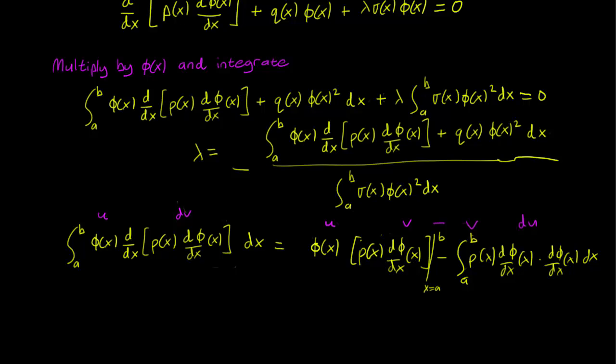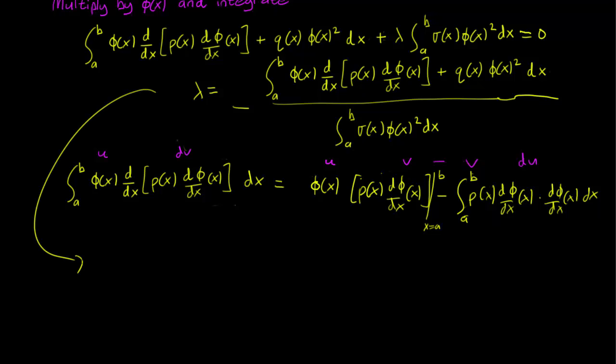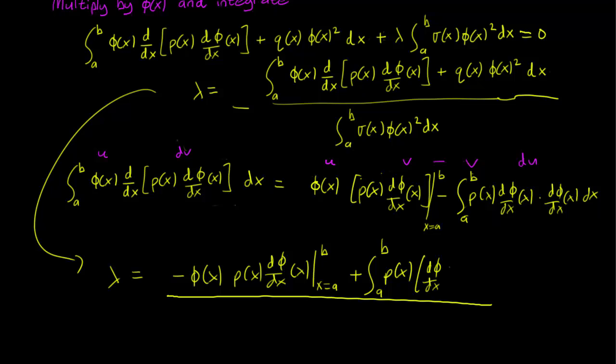Given this integration by parts calculation, we can rewrite lambda as: lambda equals minus phi(x) p(x) dphi/dx evaluated from x equals a to b. Since we have a minus sign here and another minus, two minuses make a plus, so we have plus the integral from a to b of p(x) times (dphi/dx) squared.